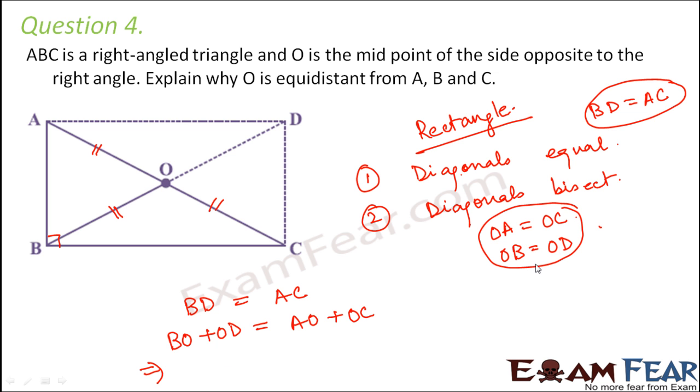Now since we know that BO is equal to DO, therefore we can write, instead of DO we can write BO. Similarly here we know that AO is equal to OC, so instead of OC we can write AO.